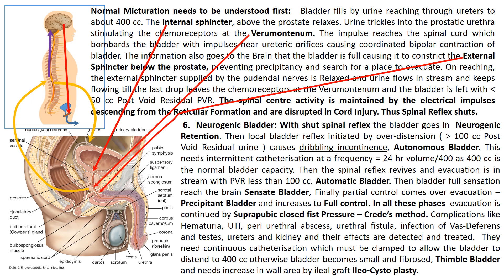The patient does not have to hurry to pass urine and can search for a place to evacuate. On reaching that place, the external sphincter supplied by the pudendal nerve is relaxed, and urine flows in a stream to the last drop, leaving less than 50 cc of post-void residual urine (PVR). The spinal center activity is maintained by electrical impulses descending from the reticular formation in the medulla, pons, and midbrain. These are disrupted in spinal cord injury, shutting down the spinal reflex, leaving the bladder in neurogenic retention.